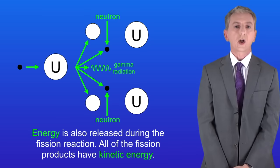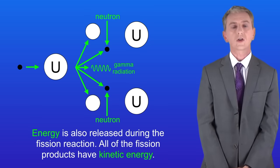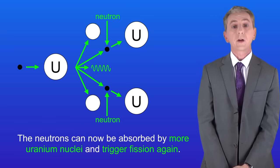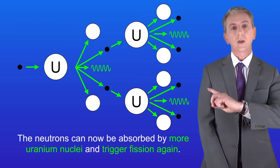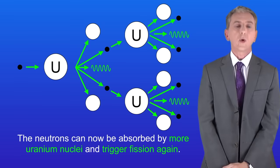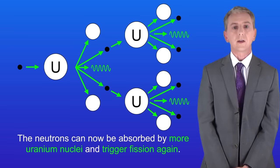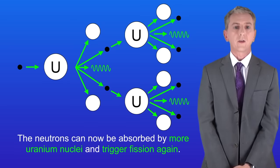Now the really important part about this process is what happens to the neutrons emitted during fission. The neutrons can now be absorbed by more uranium nuclei and trigger fission again like this. And again when these nuclei undergo fission they emit two or three more neutrons each, and these can then go on to trigger fission themselves.